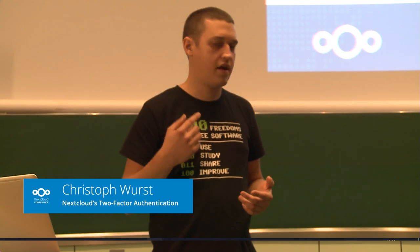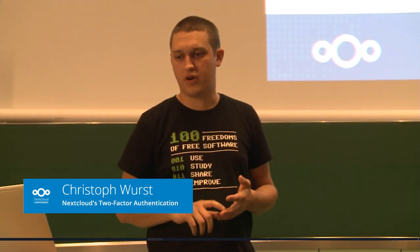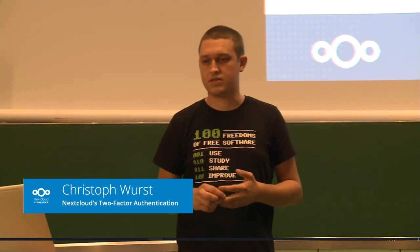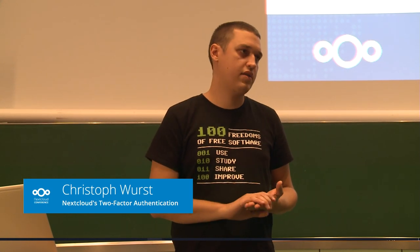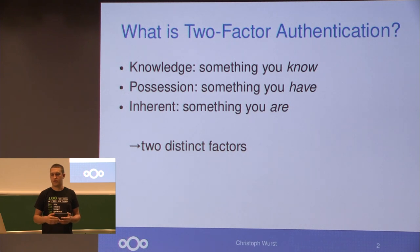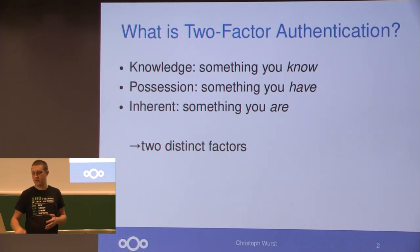And the third one is something that you are, like your iris, your fingerprint — something that's inherited from yourself. And with two-factor authentication you use two of these types of authentication factors together.